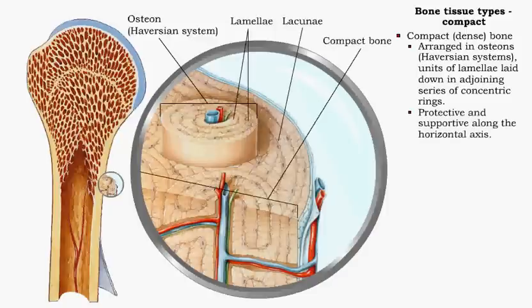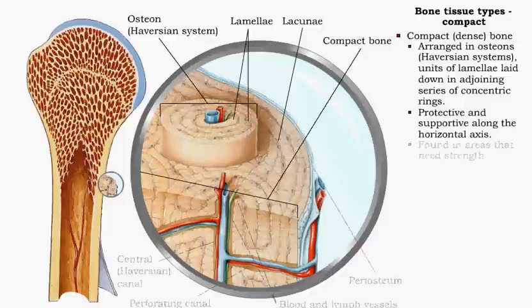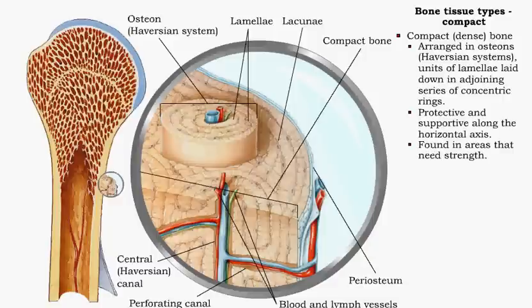The tissue is protective and supportive along the horizontal axis. Compact bone is found in areas that need strength, such as the shaft of long bones.